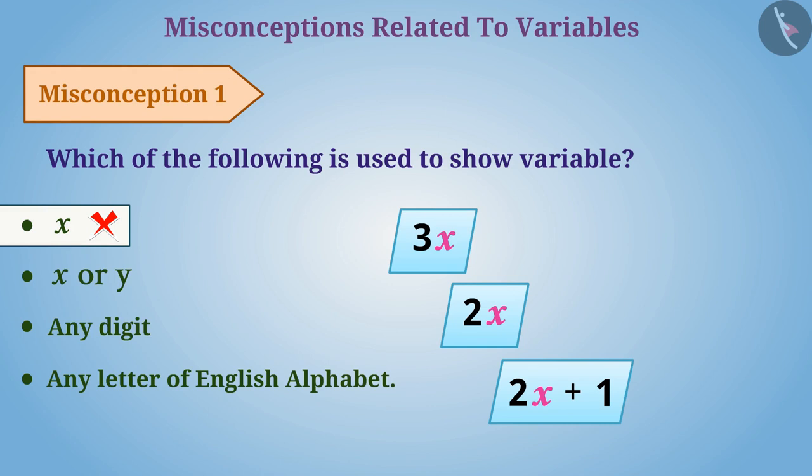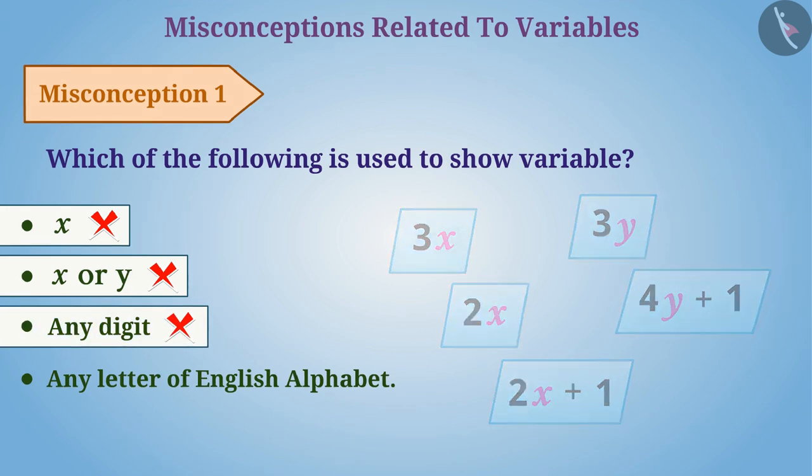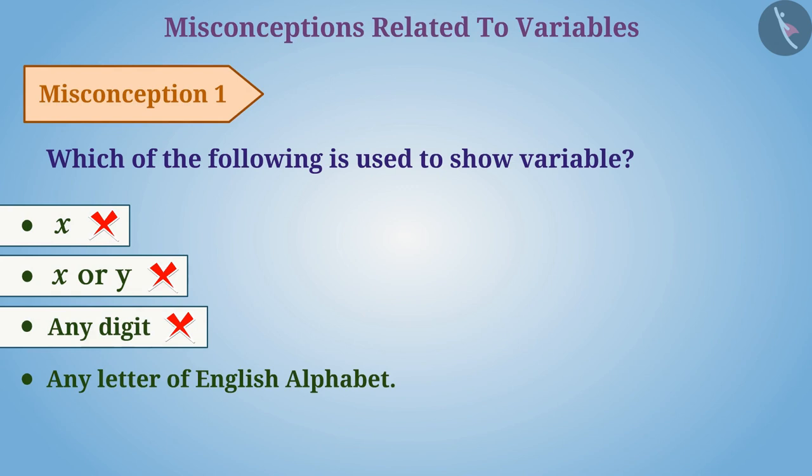In the same way, there is a common belief that only x or y can be used to show variables. This is also a misconception. Similarly, a digit cannot be used for a variable as well. The correct understanding is that any letter of English can be used to show variables.